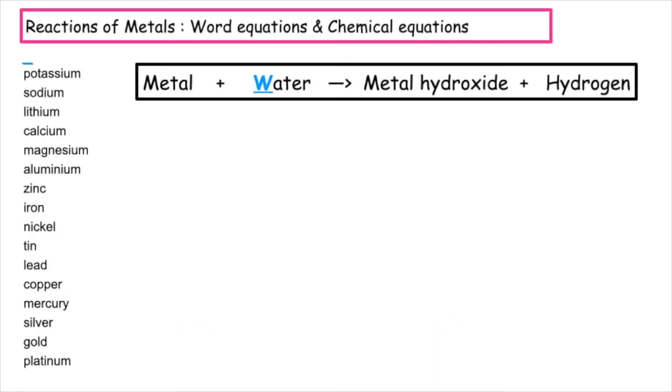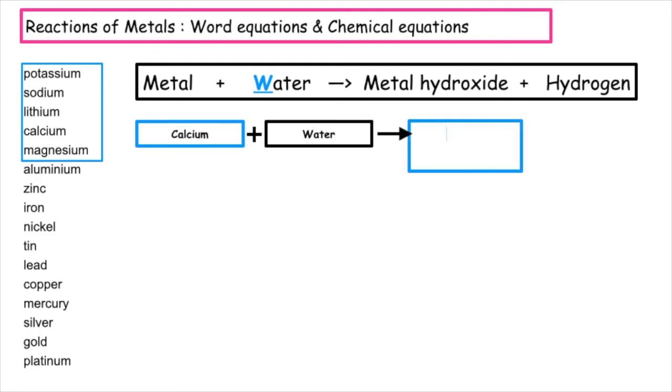So we have to be able to write the word equations and then the chemical equations for metal plus water. Metal plus water reacts to produce a metal hydroxide plus hydrogen gas. Let's use an example. Let's do calcium plus water. Would react to produce calcium hydroxide and hydrogen gas.